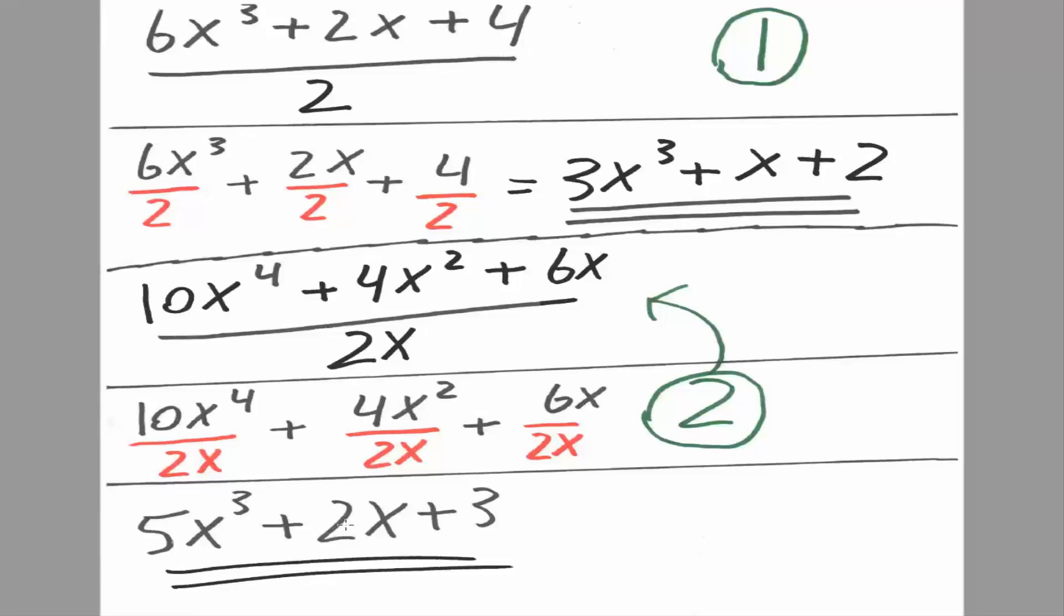4 divided by 2 is 2. x squared divided by x. So essentially x squared divided by x raised to 1. So that would be 1.